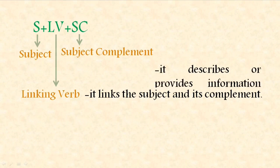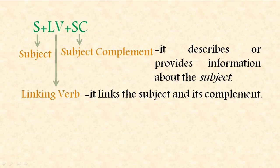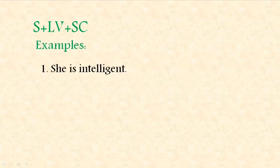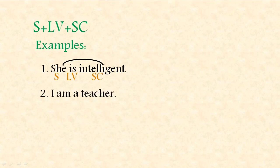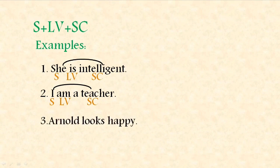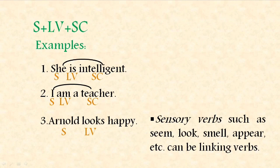The last pattern is SLVSC, or subject plus linking verb plus subject complement. A linking verb links the subject to its complement. The subject complement describes or provides information about the subject, and it can be an adjective or a noun. Examples: 'She is intelligent' — 'she' is the subject, 'is' is the linking verb, and 'intelligent' is the subject complement. 'I am a teacher' — 'I' is the subject, 'am' is the linking verb, and 'teacher' is the subject complement. 'Arnold looks happy' — note that sensory verbs such as seem, look, smell, and appear can be linking verbs. 'Happy' is the subject complement describing Arnold.